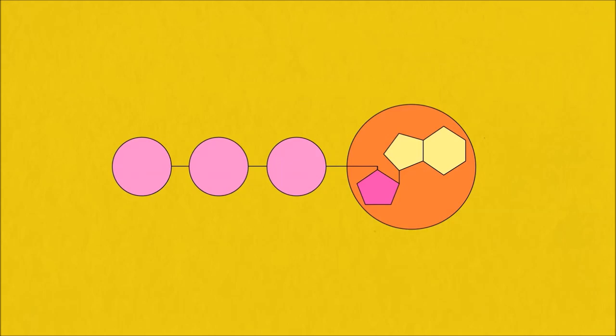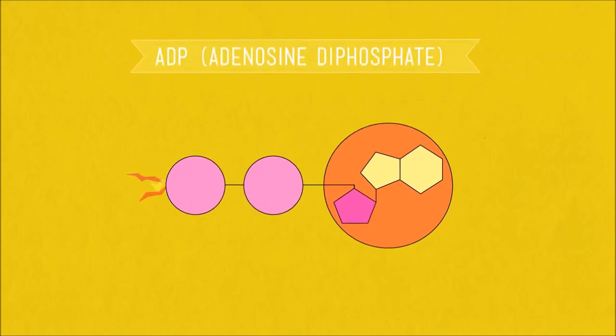Now one thing you need to know about these three phosphate groups is that they are super uncomfortable sitting together in a row like that. Like three kids on a bus who hate each other, all sharing the same seat. So because the phosphate groups are such terrible company for each other, ATP is able to do this nifty trick where it shoots one of the phosphate groups off the end of the seat, creating ADP or adenosine diphosphate because now there are just two kids sitting on the bus seat.